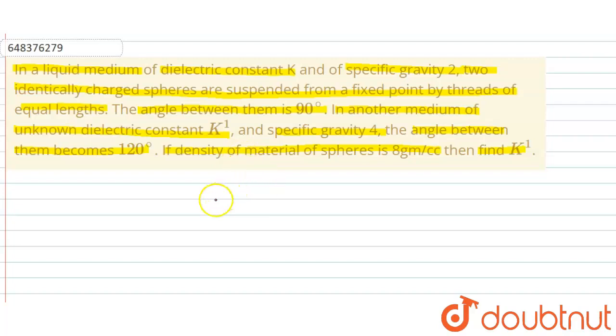If we represent this data in a diagram, it will be like this. Let this is the fixed point from which two equally charged spheres are suspended—let it is Q and it is also Q charge—and the length of the threads is equal, let it is L and L. Angle between them is 90 degrees. Dielectric constant of the medium one is K, specific gravity is also given.